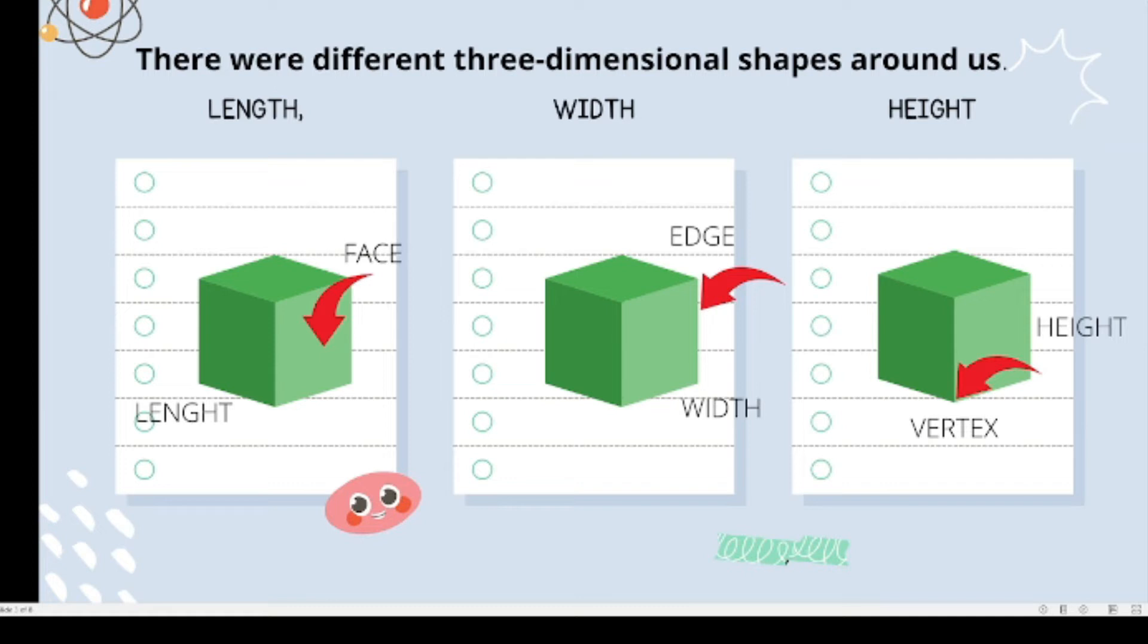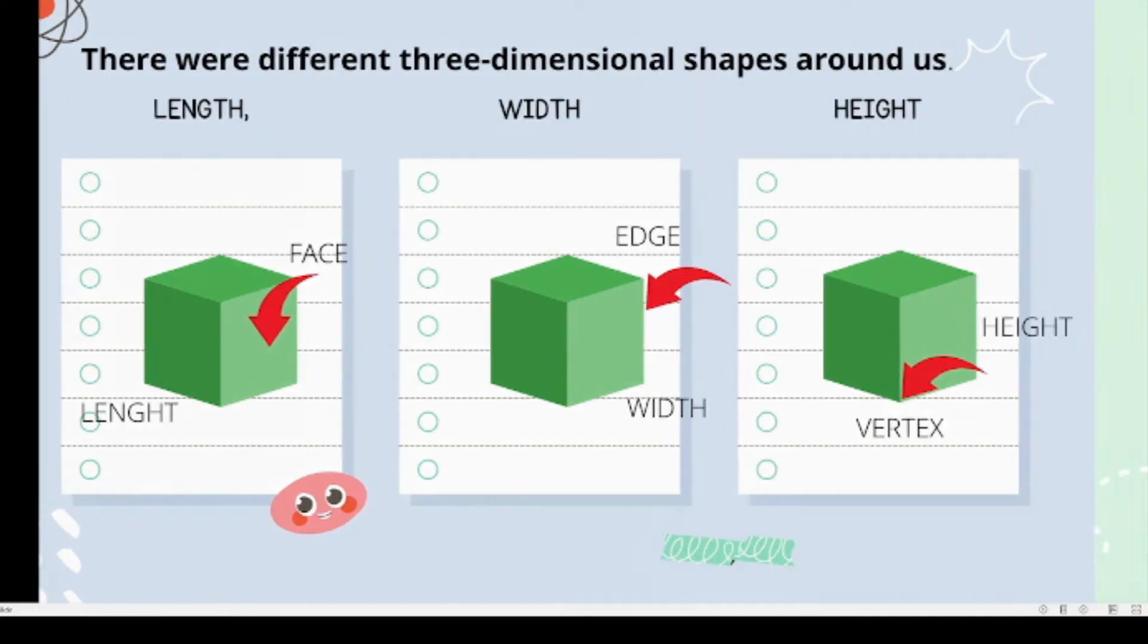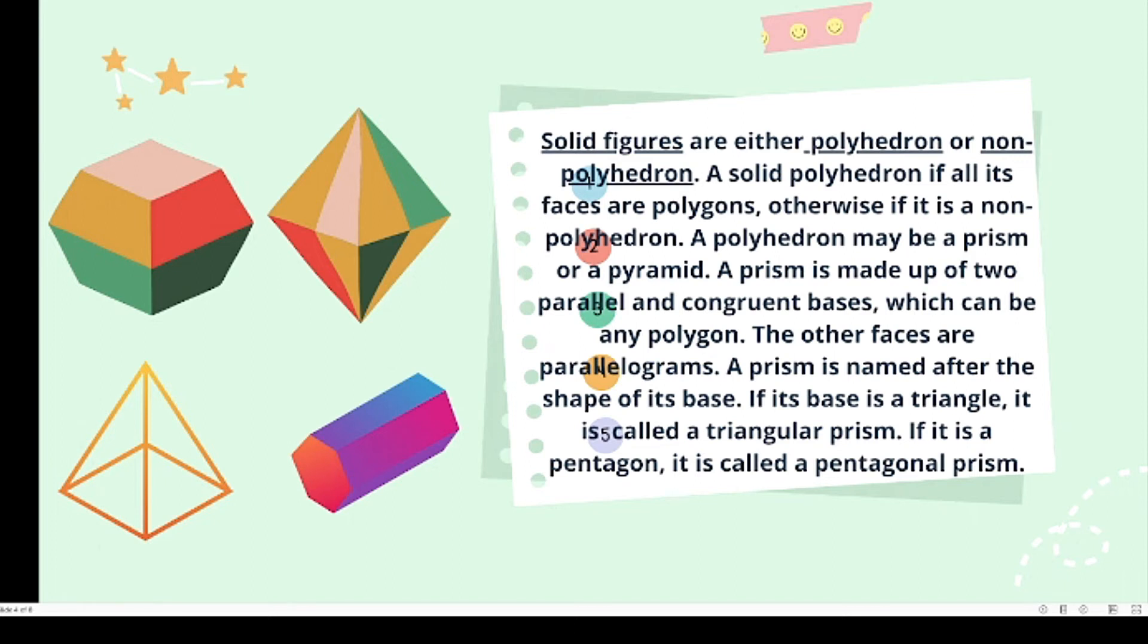Solid figures are either polyhedron or non-polyhedron. A solid is a polyhedron if all its faces are polygons, otherwise it is non-polyhedron. A polyhedron may be a prism or pyramid. A prism is made up of two parallel and congruent faces which can be any polygon. The other faces are parallelograms.